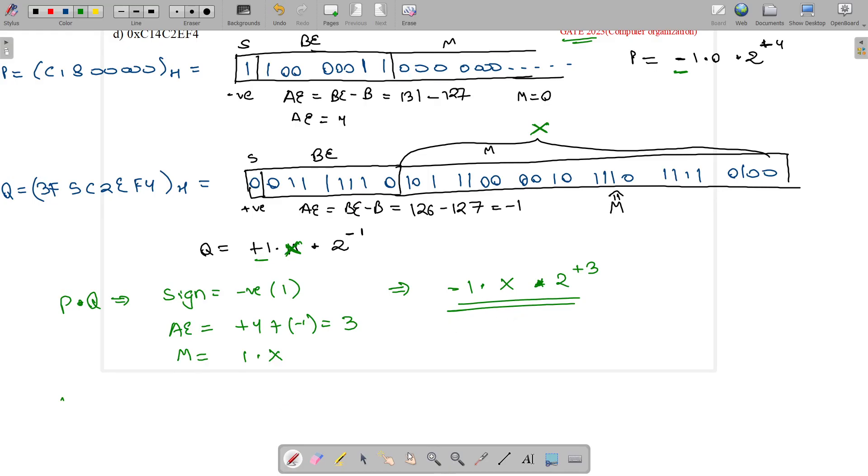Now let's write it in SEM format. As sign is negative, 1 will come. What will be biased exponent? Biased exponent will be normal bias plus this power 3, so it equals 130. Sign will be 1, biased exponent will be 130.